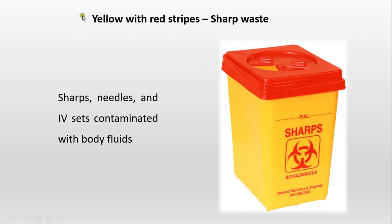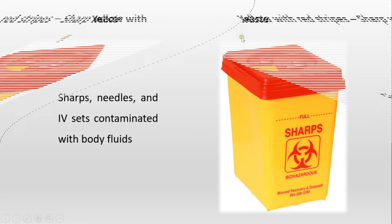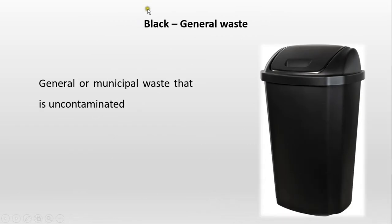Yellow with red stripes is used for sharp waste. Sharps, needles, and IV sets contaminated with body fluids are taken as sharp waste, and these should be disposed of into sharps bins. Black color code is for general waste — municipal waste that is uncontaminated is taken as general waste.